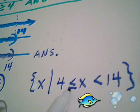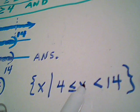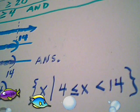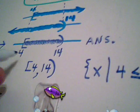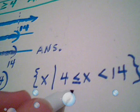And those are three different ways: here's the first way, here's the second way, and here's the third way of writing our solution set to this compound inequality.